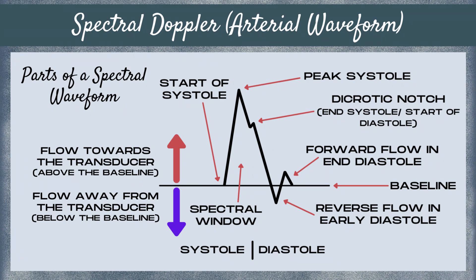You can see that the waveform is divided into systole and diastole. There's also an area called the spectral window. When this area is open and clear on the ultrasound, the flow is not turbulent. When this area is filled in, it's a sign of turbulence.